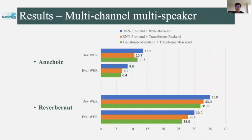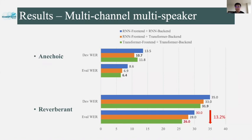Here are the results on the multi-channel multi-speaker data. We can observe from the chart that transformer-based models are consistently better than the RNN-based models in both anechoic and reverberant conditions. In this experiment, the time-restricted self-attention in the masking network with a context window of only 30 frames — a really small context window — can further improve the performance. For example, in the reverberant condition, the fully transformer-based model achieves 13.2% relative word error rate improvement on the evaluation set.